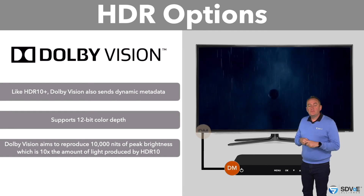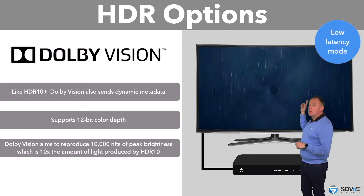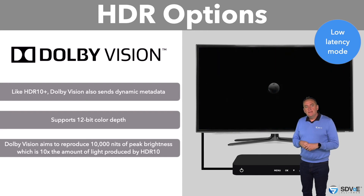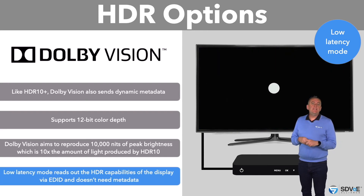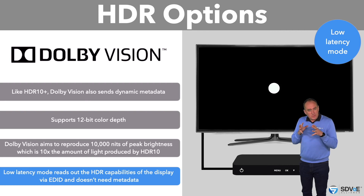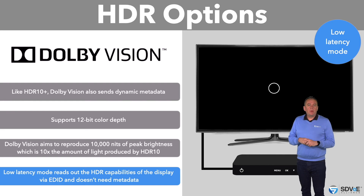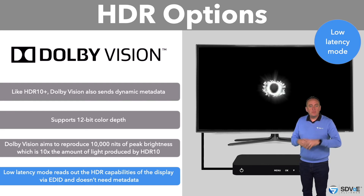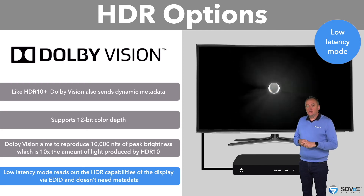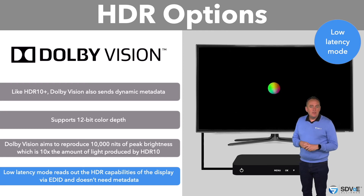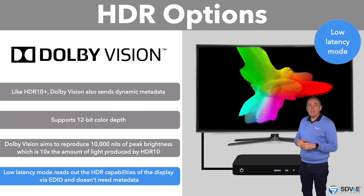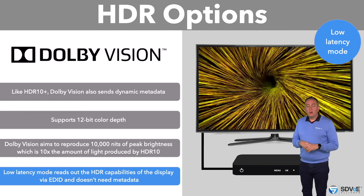The latest iteration of Dolby Vision is called low latency mode. In this mode, the source reads out the detailed HDR capabilities of the display via EDID, and then passes a customized signal built specifically for that display. The same source would pass different signals when connected to different displays. Because the TV is receiving a customized signal already, there's no need for metadata in Dolby Vision low latency mode, so none is passed.